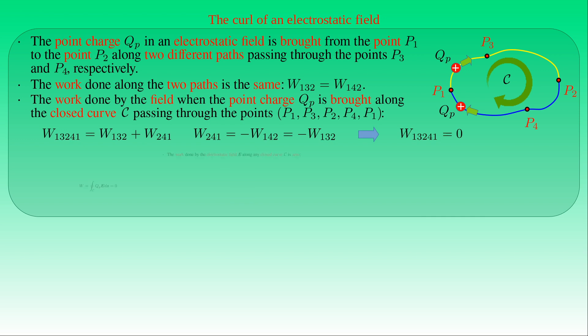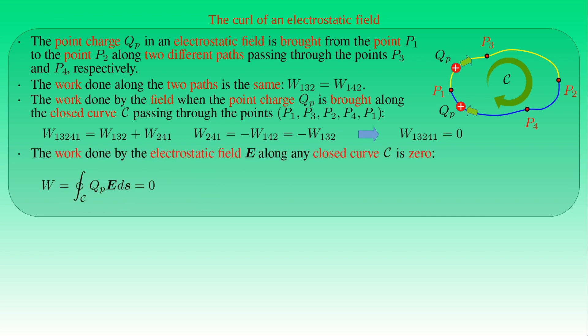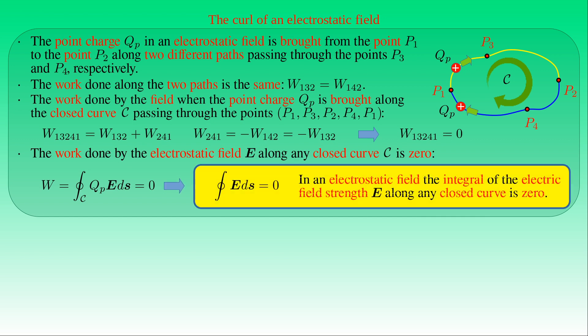The work done by the electrostatic field along any closed curve C is zero — the line integral of QP times E with respect to arc length S along closed curve C vanishes. Since QP is constant, the line integral of electric field strength E with respect to arc length S along any closed curve is zero in an electrostatic field.